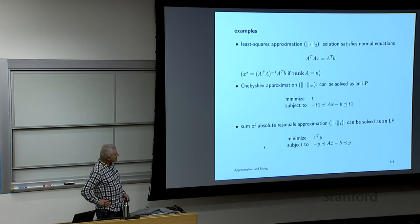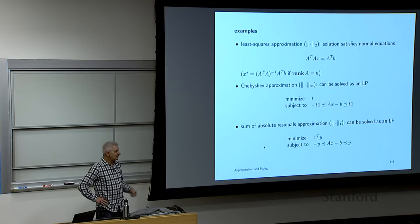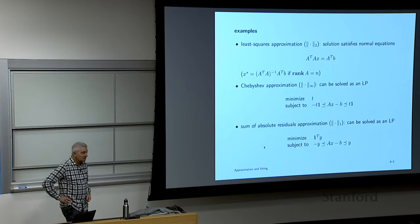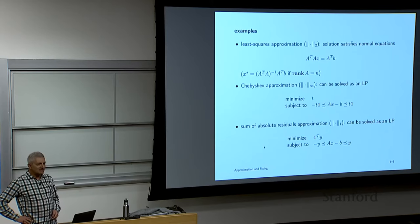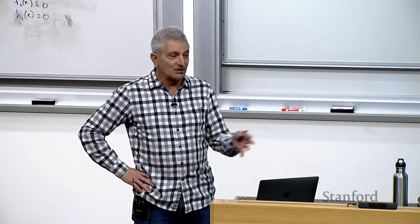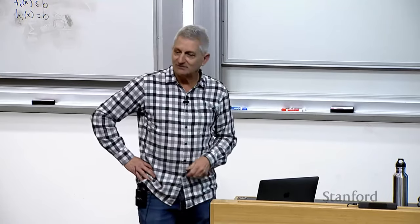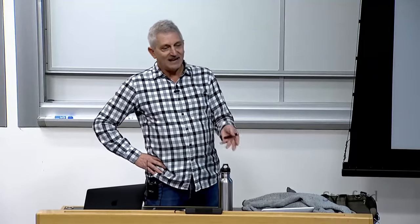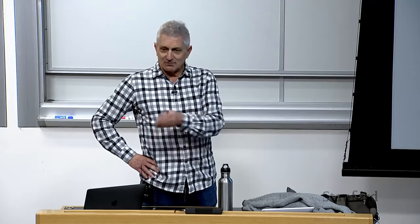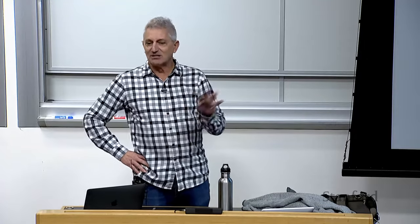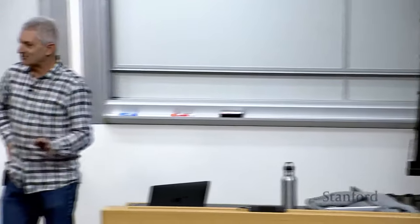When you use the infinity norm, it's called Chebyshev approximation — can be converted to an LP. Sum of absolute residuals (L1) also converts to an LP. But you don't need to know this anymore: in CVXPy you literally type 'norm(A@x - b, 1)' and solve. One line: problem = minimize(norm(A @ x - b, 1)), then dot solve. That constructs and solves the problem.